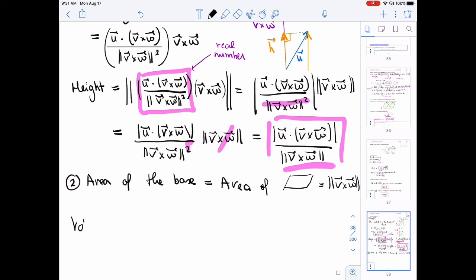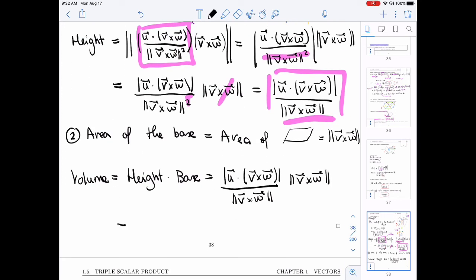All right. So in total, the volume. The volume is height times base. And so the height we found in one, the base we found in two. They cancel and we get the absolute value of the triple scalar product as claimed.